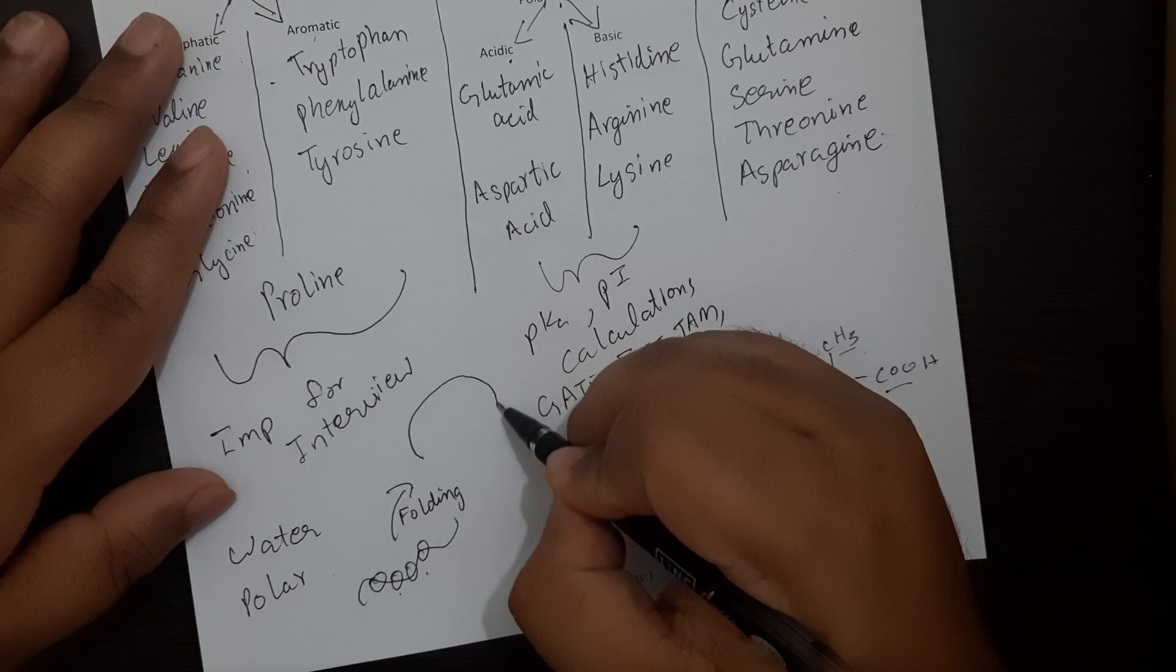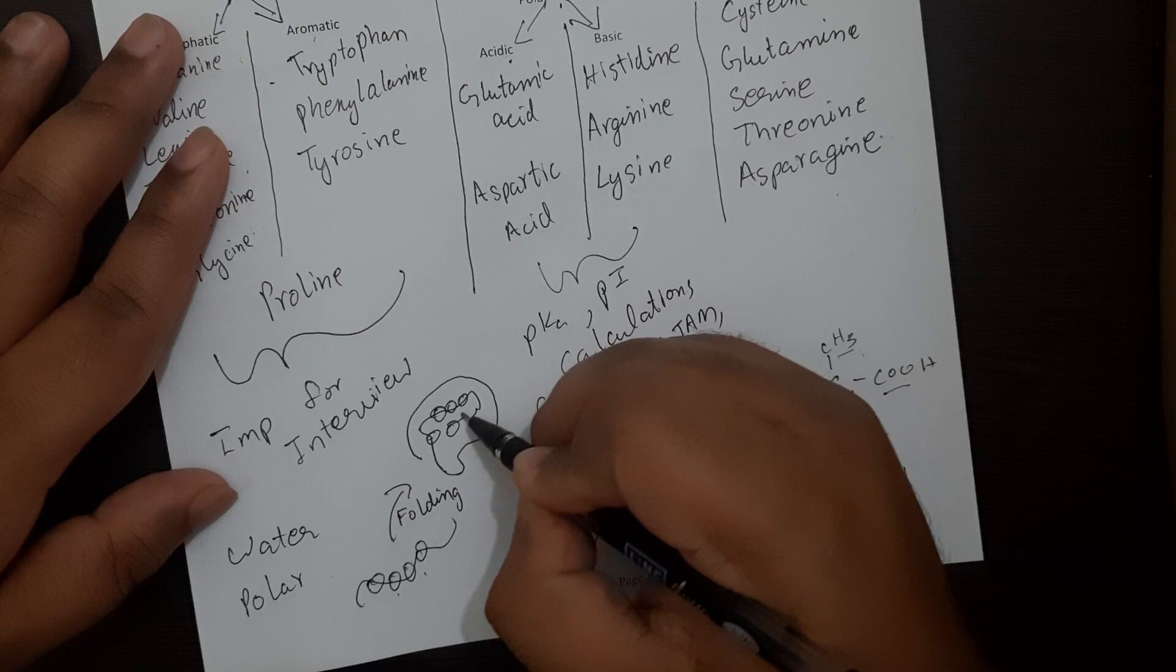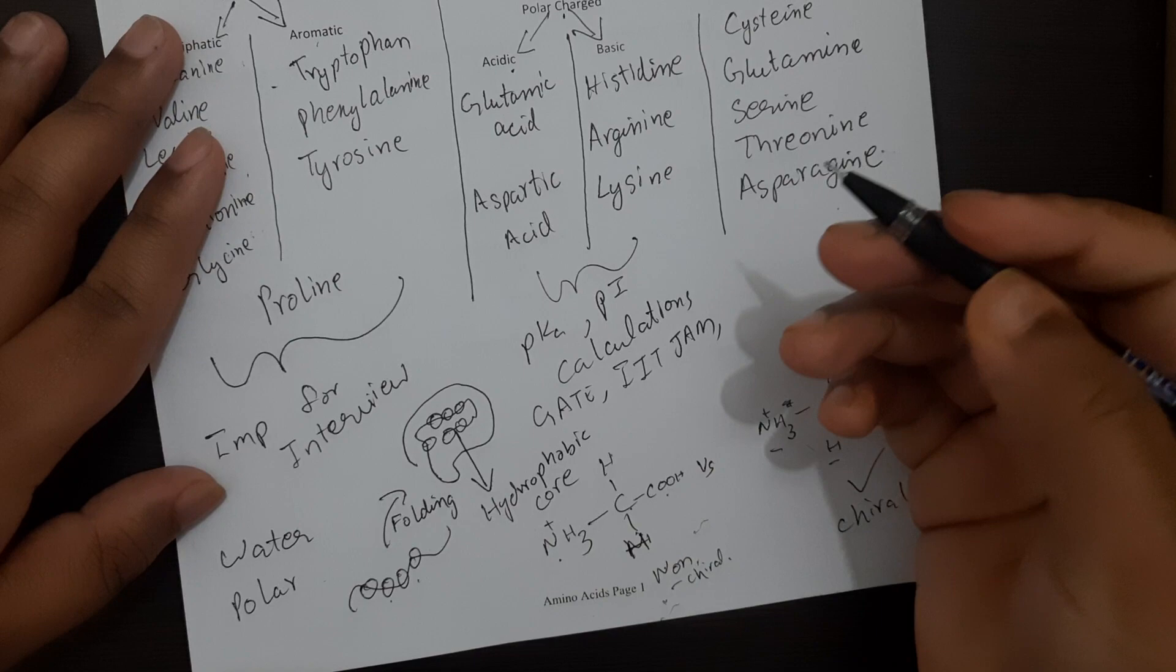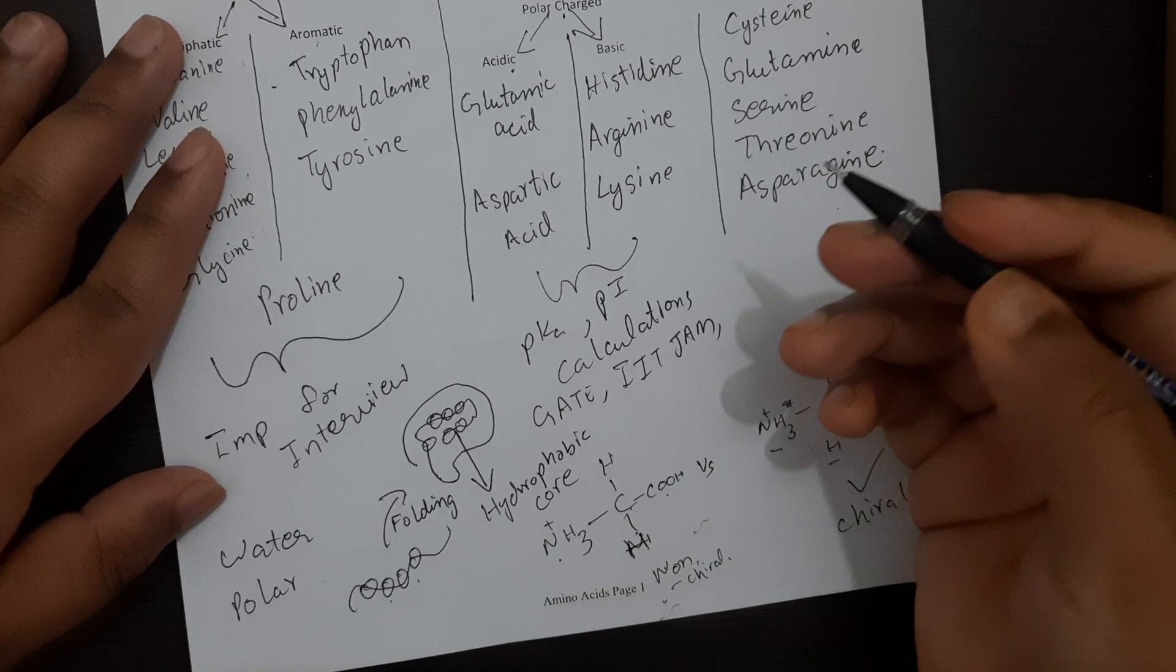...it will fold in such a manner that the protein's inner part would contain all the hydrophobic amino acids. And this inner part is known as the core of the protein or the hydrophobic core. This is usually where you always find the hydrophobic amino acids.